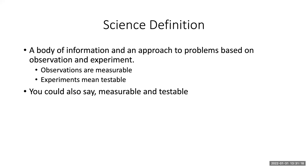A good scientific definition: science is a body of information and an approach to problems based on observation and experiments. So science is both a set of information and a method — not just here's the info, but how did we get it. Observation means it's measurable, experiments means it's testable. There are many very interesting questions that we just can't deal with scientifically because if we can't measure it and we can't test it, we can't address it scientifically — but that doesn't mean it's not interesting.